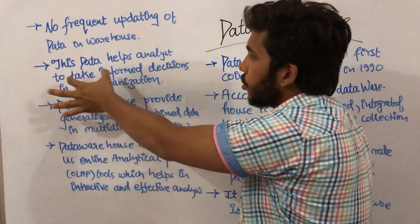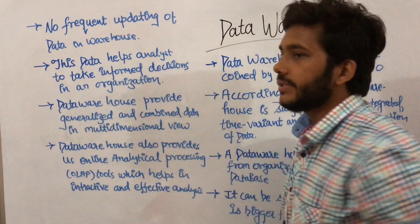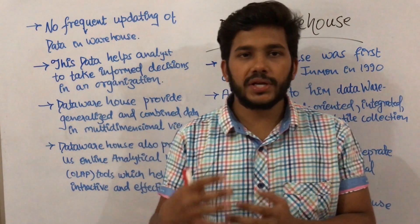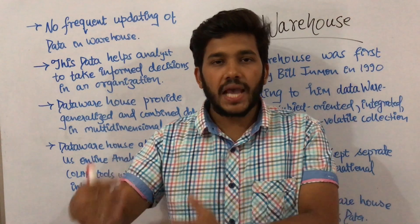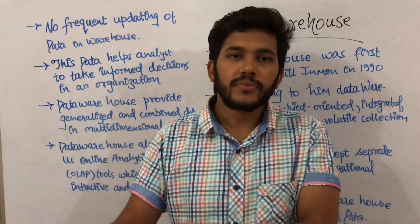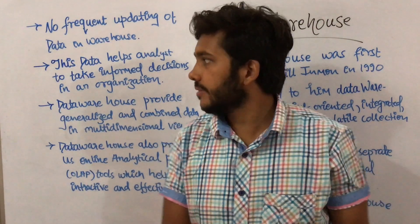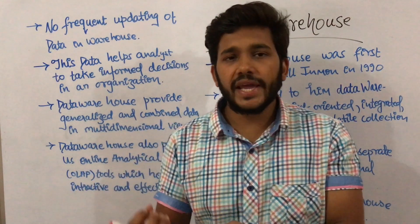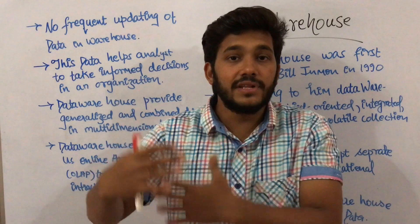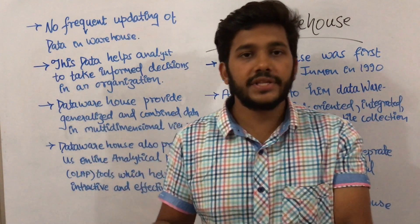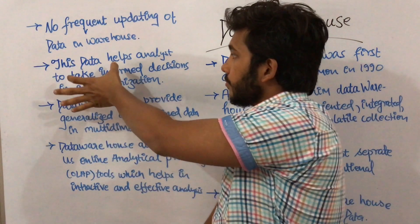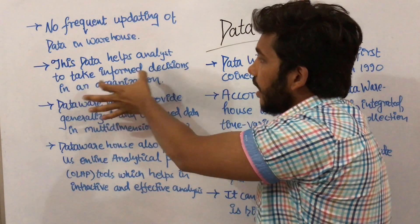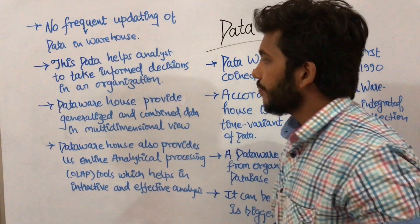This data helps analysts take informed decisions in an organization. For example, a particular restaurant sells Chinese food more in summer and Indian food more in winter. This helps the analyst decide that in summer they will stock and sell more Chinese food, and in winter they will sell more Indian food. So analysts take the data and make decisions based on it.